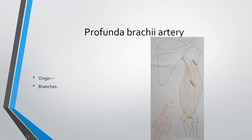The profunda brachii artery is one of the largest branches of the brachial artery. It runs behind the shaft of the humerus along with the radial nerve in the lower triangular space. Then on the lateral aspect it gives two important branches — anterior and posterior descending branches — which take part in the formation of the anastomosis of the elbow joint.